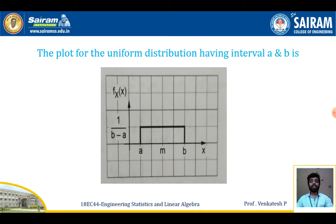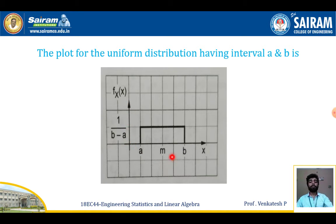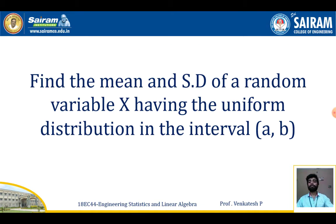Plotting the graph for uniform distribution over the interval (a, b): taking x on the horizontal axis and f(x) on the vertical axis, and plotting with respect to the function 1/(b - a), we obtain a rectangular curve. Now I am going to find the mean and standard deviation of x having uniform distribution over (a, b).